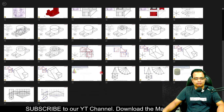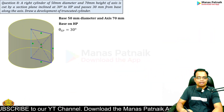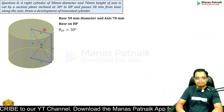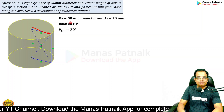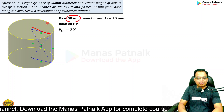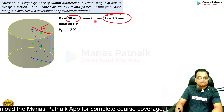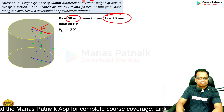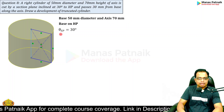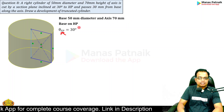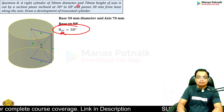This can be done very easily. We are talking about a cylinder — the base radius is not given directly, rather the diameter is given. Although diameter is 50, the radius has to be 25. The axis is 70. The section plane cuts the axis at a height of 30mm with respect to the HP.